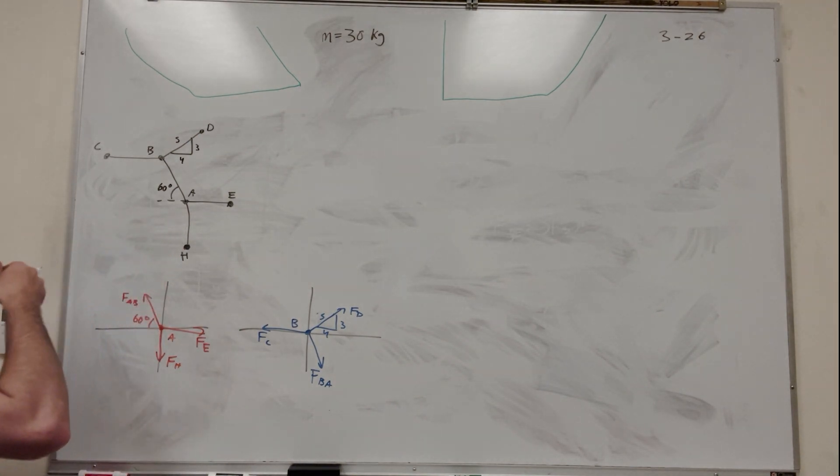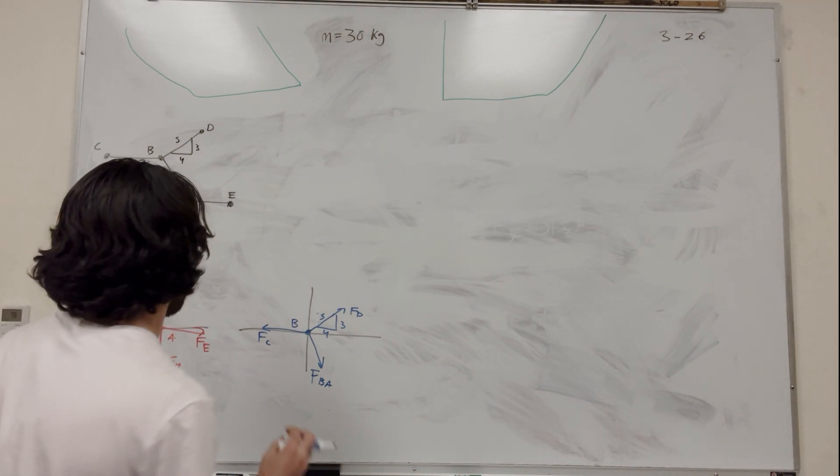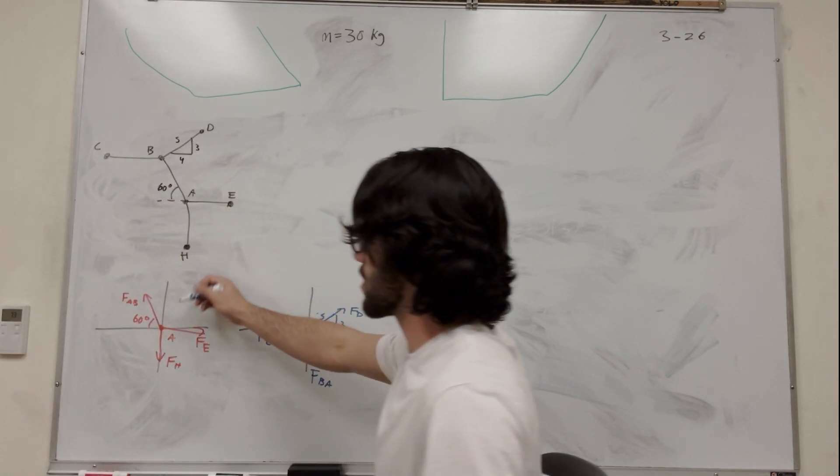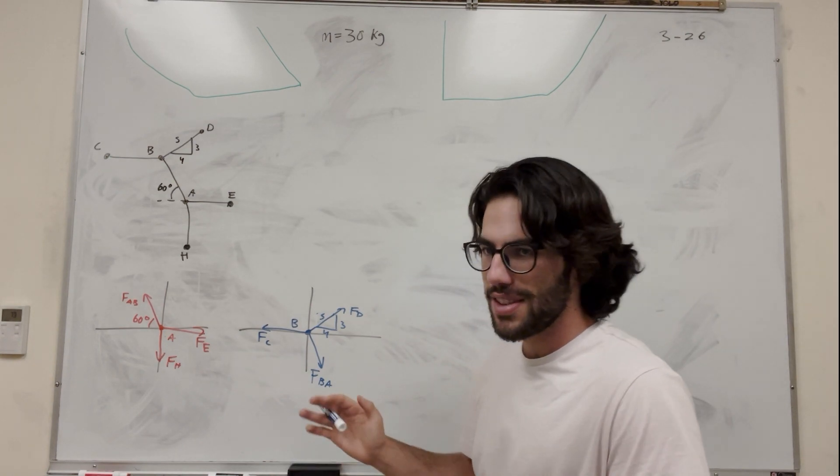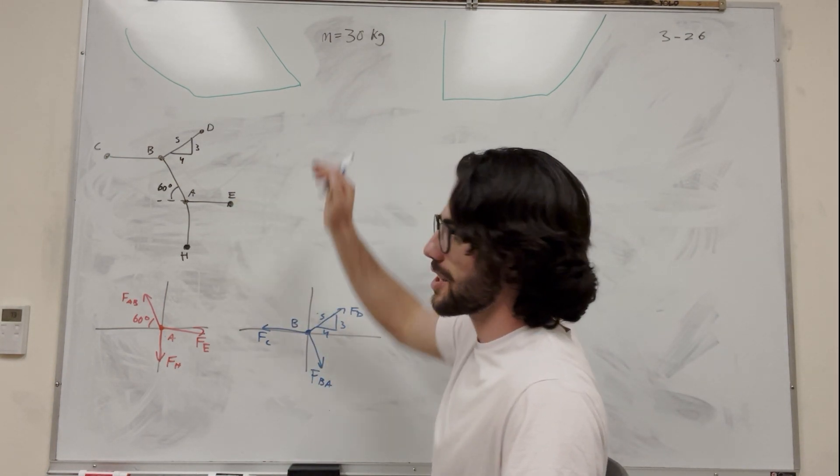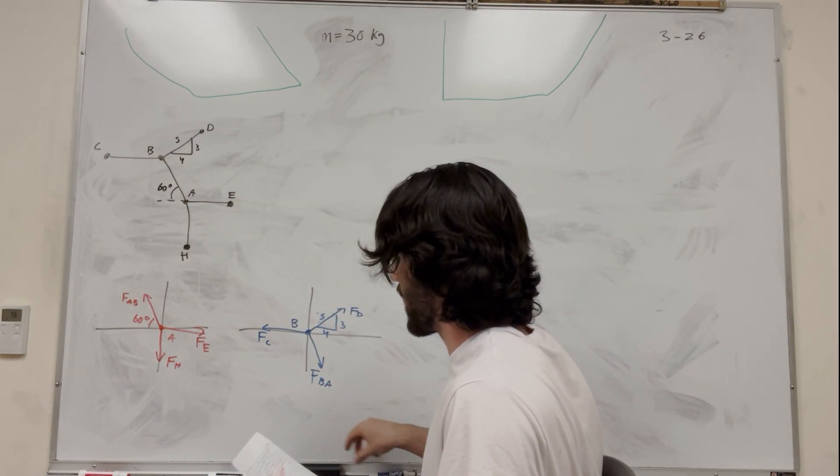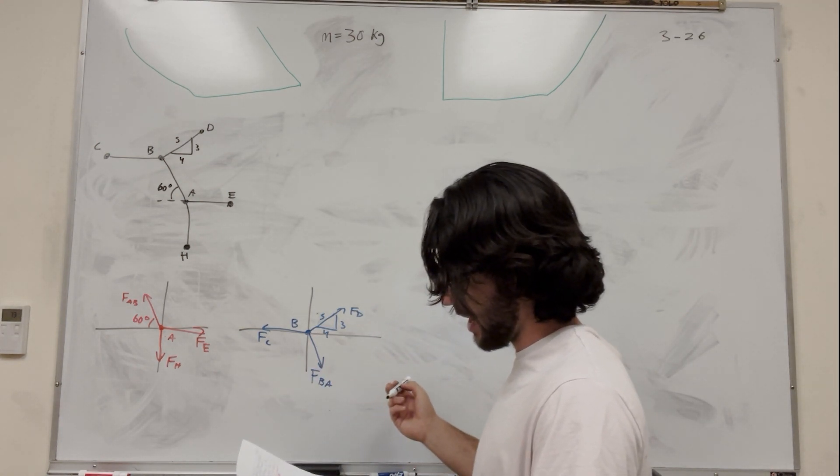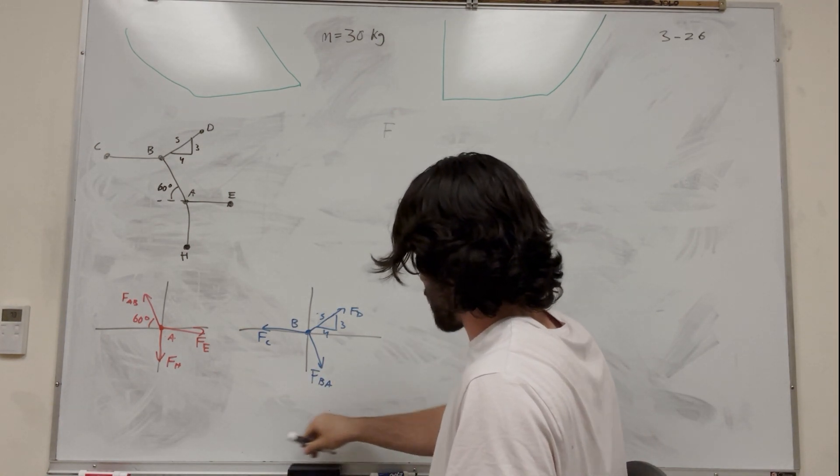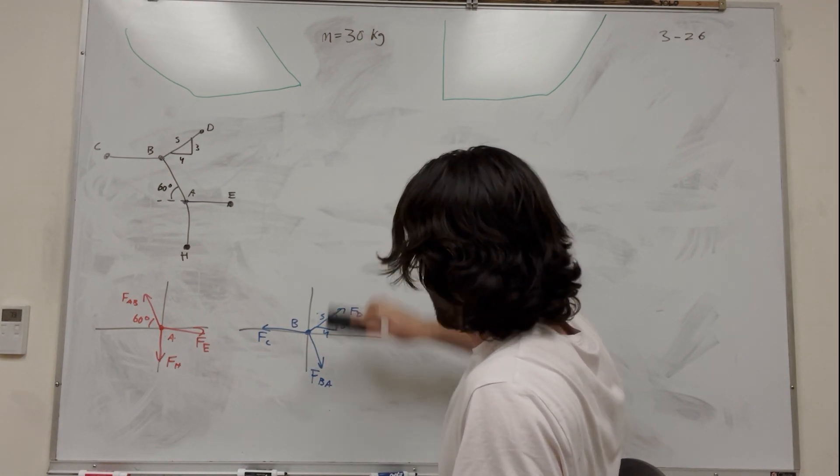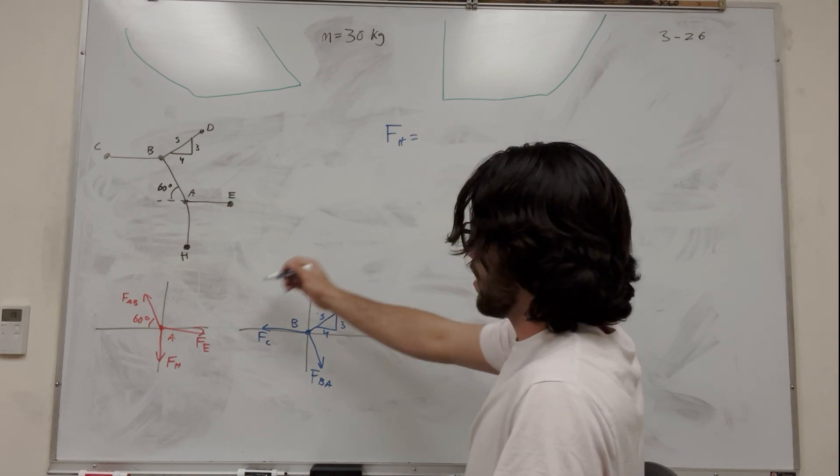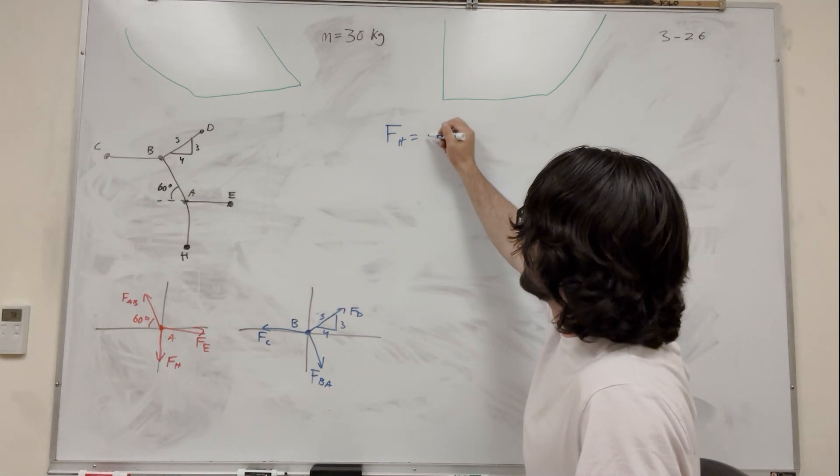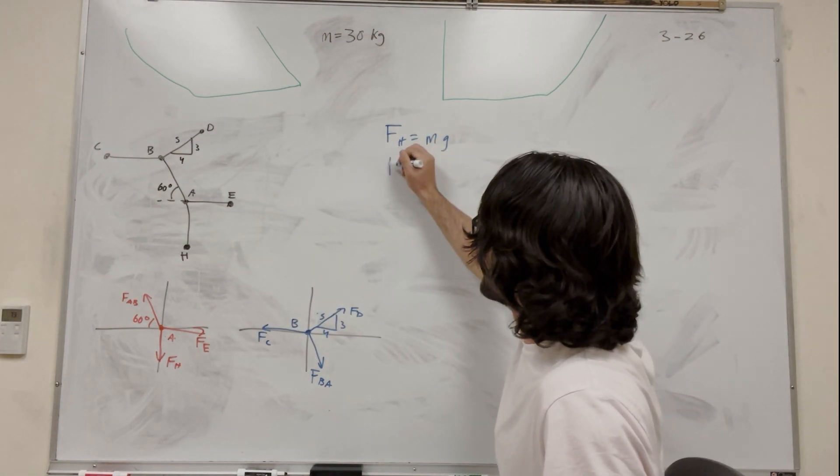So let's start from the bottom and work our way up, right? Well, let's look at this string first of all, force E or force H. So force H is just holding our mass, right? So force H is holding our mass. We can just say that force H is just going to be mass times gravity, right? Mass times gravity.